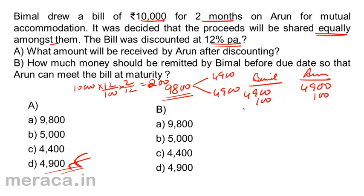They both share the discount of Rs.100 each. So the amount of Rs.5,000 each — totalling Rs.10,000 — is accounted for like this. Next, how much money should be remitted by Bimal before the due date so that Arun can meet the bill at maturity? Arun already has Rs.5,000 worth of funds with him. The remaining Rs.5,000 is with Bimal. If Bimal sends the Rs.5,000 to Arun, Arun can meet the bill for Rs.10,000. Therefore, the amount of money that should be sent by Bimal is Rs.5,000.